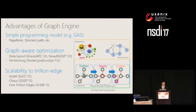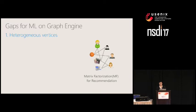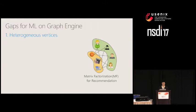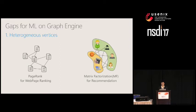However, there are problems with supporting machine learning on existing graph engines. First, modeling machine learning into graph structure often introduces heterogeneous vertices. For example, recommendation problems naturally contain user and item vertices with different properties. Existing graph engines mainly support homogeneous graphs — common for traditional workloads like PageRank, where each vertex represents a web page with the same properties. Applying a homogeneous graph model to heterogeneous machine learning algorithms introduces overhead in both programming and efficiency.